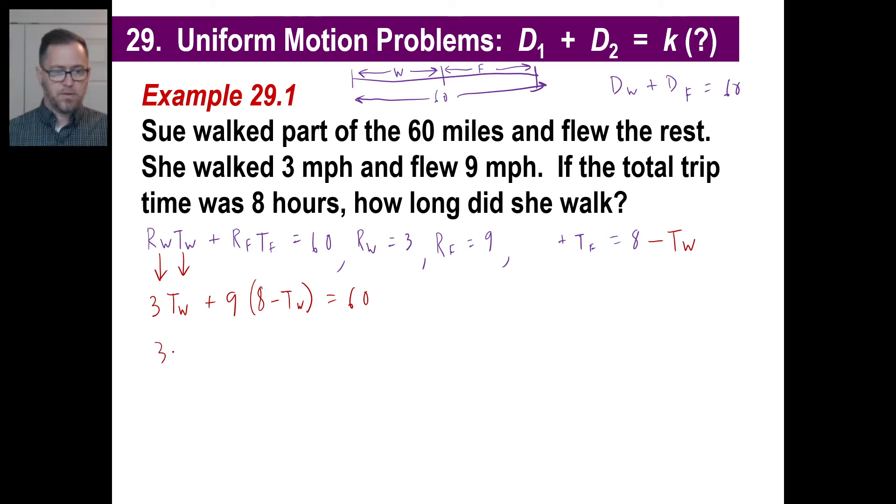Can we solve it? Yes, all we have is t sub w. Three times walking plus 72 plus nine times negative will be negative nine t sub w equals 60. I got three, I got negative nine, that gives me negative six. I'm going to yoink this 72 over here. 60 minus 72 is negative 12. So negative six times what is negative 12? And the answer is two. So Sue walked for two hours.